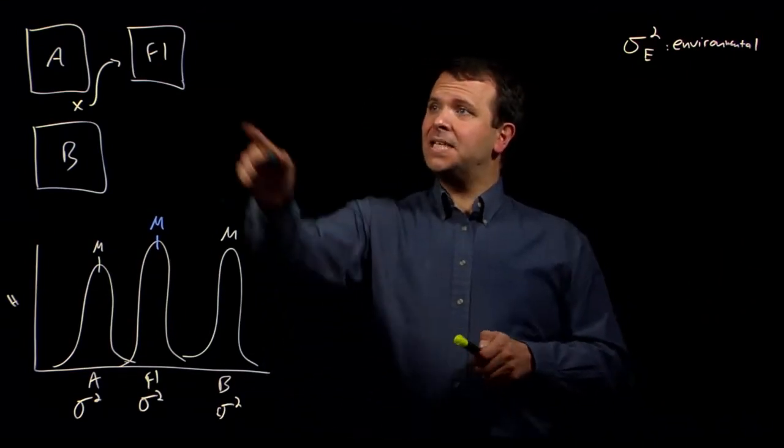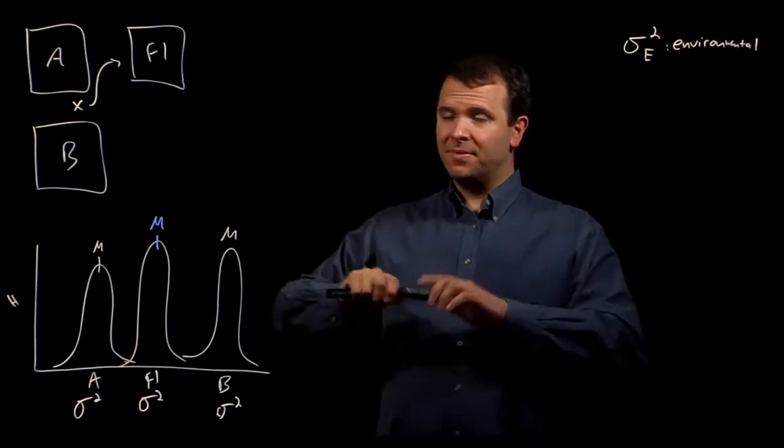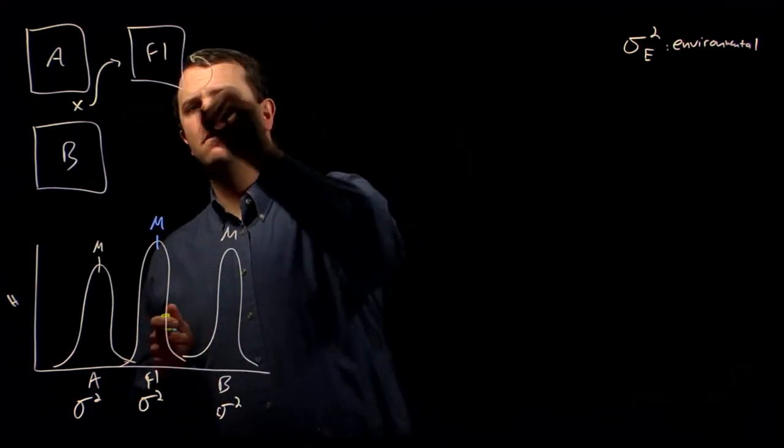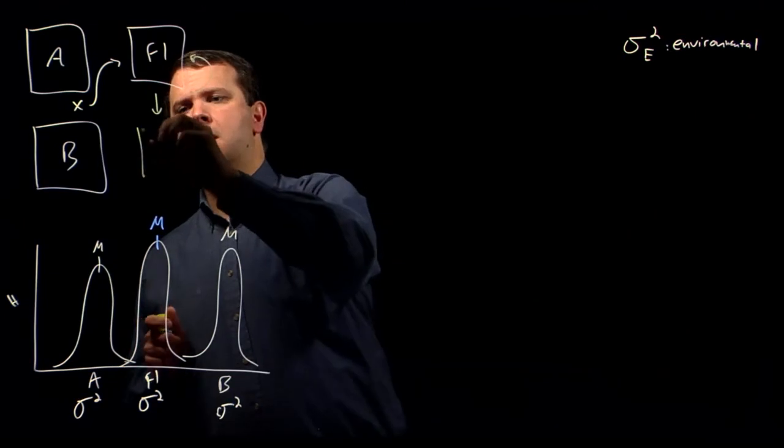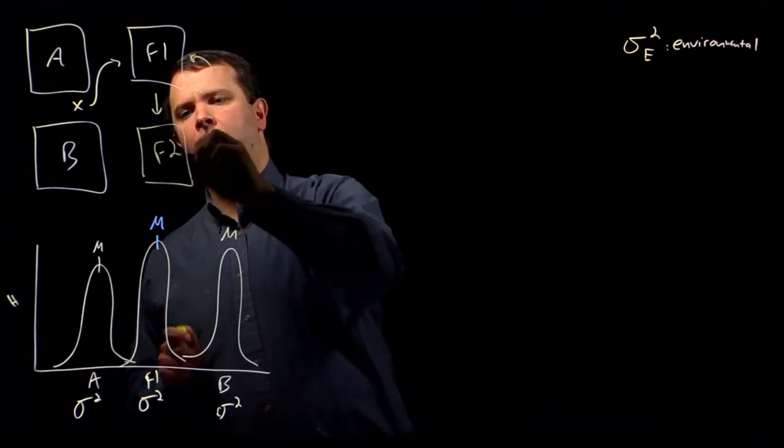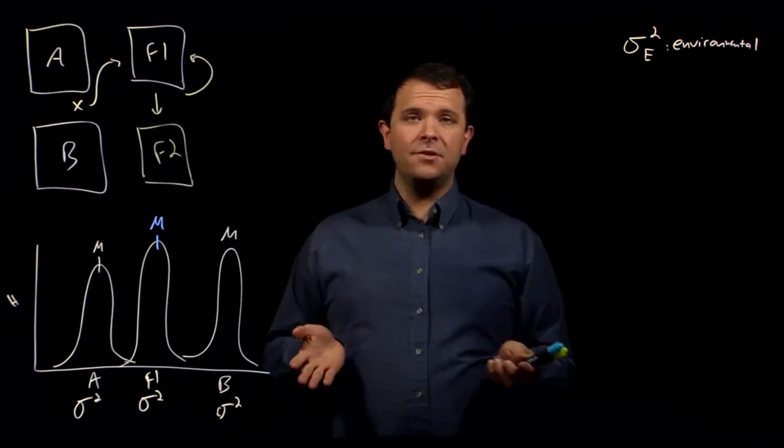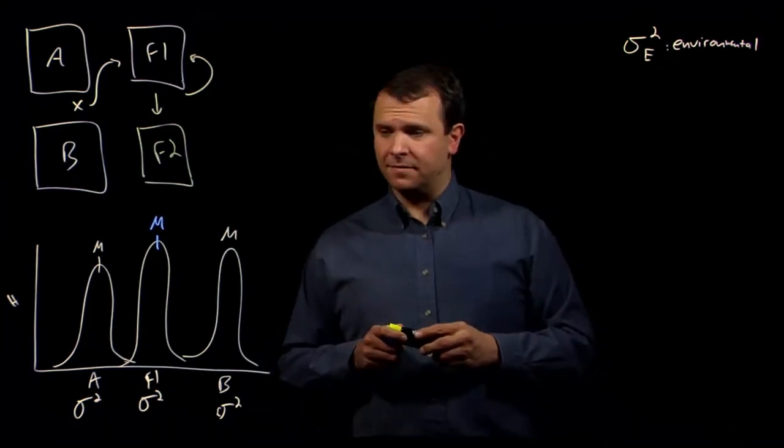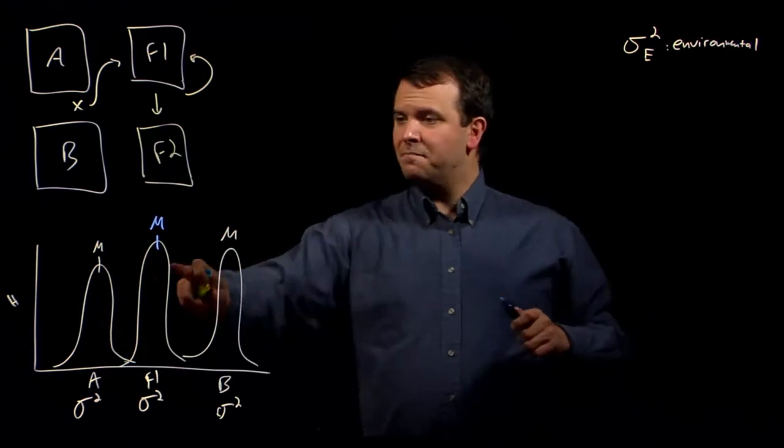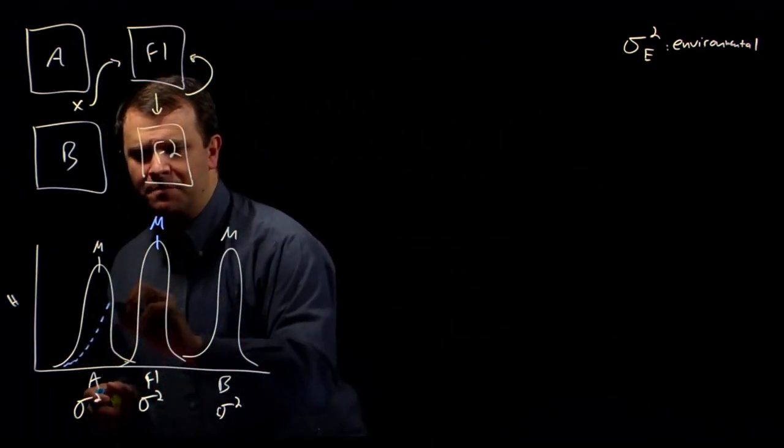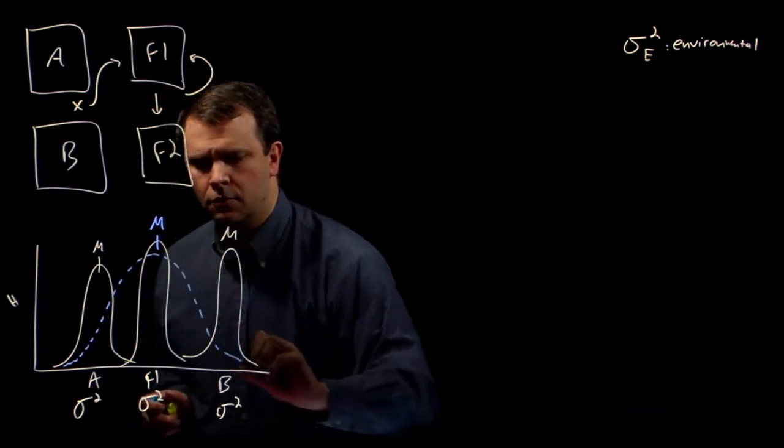Now, let's allow these plants to cross with each other to make some F2 plants. And something interesting happens in the F2 generation. The mean stays the same, but the distribution grows wider.